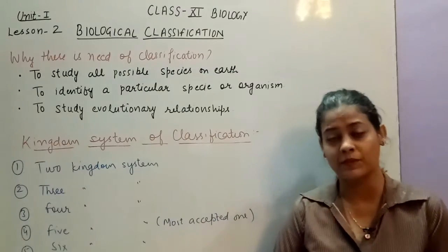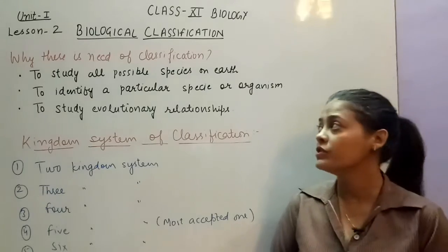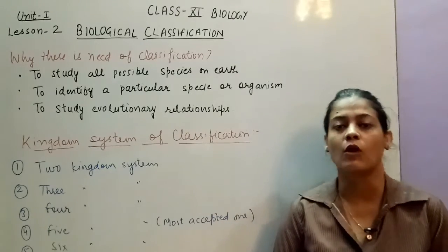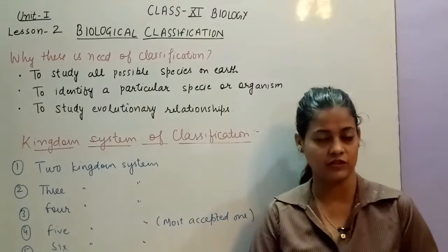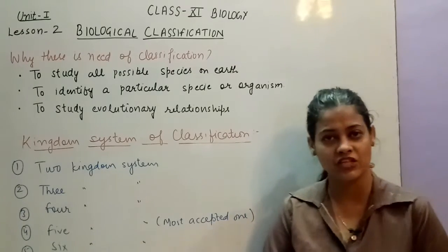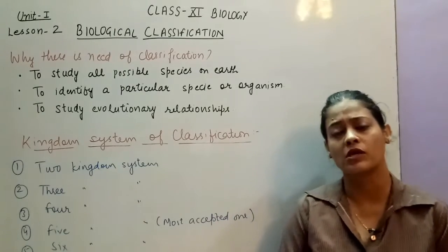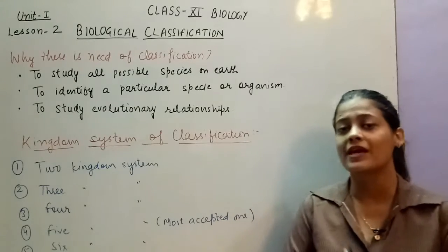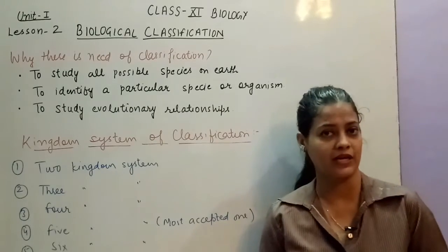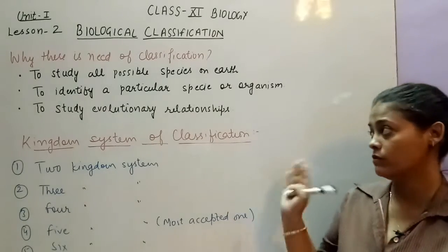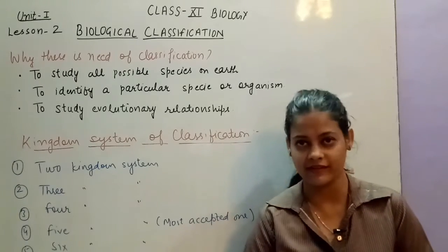Now this is a very important chapter because the basic things in this chapter are very important for this unit. So the chapter name is Biological Classification. Classification means — if there are so many organisms on earth and we need to study a particular organism, it is not easy to study it separately or individually. So what we do is we classify the organisms into different groups or categories.